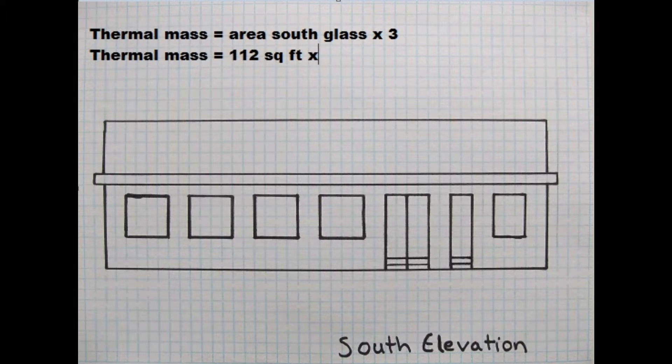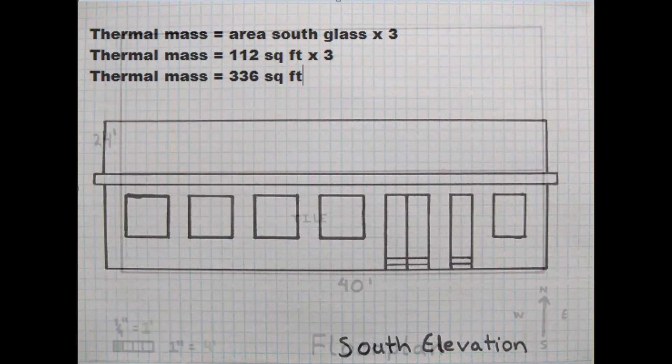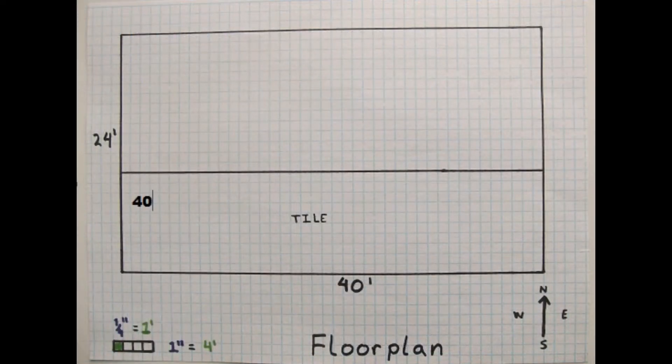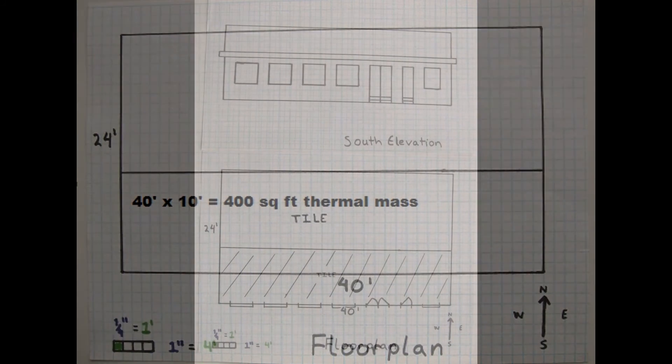You'll want the thermal mass area to be about three times greater than the area of south-facing glass. On our model, we'll multiply 112 square feet of south glass by three, which gives us 336 square feet of thermal mass needed. Let's put tile flooring on the south side of the house. If the tiles go 10 feet into the house, we can get enough thermal mass, because 40 feet times 10 feet equals 400 square feet of thermal mass, and we needed at least 336 square feet.